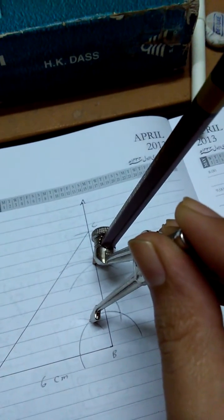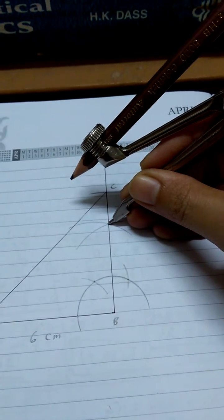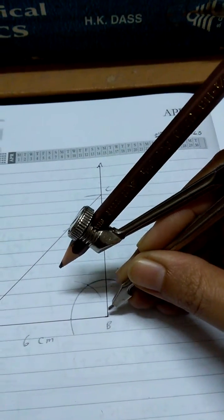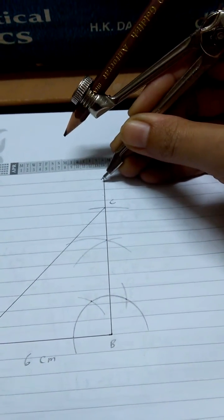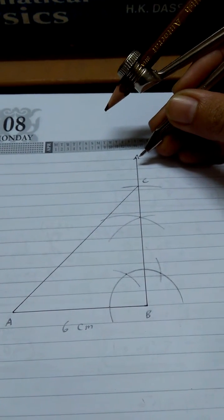...such that it cuts the previous arc at this point. This is highlighted at this point, and you are going to join this point with your point B and extend it a bit longer like this.